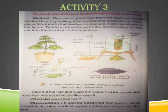Now, first Activity 3. What is Activity 3 all about? We have to study the process of photosynthesis in the leaf — how we know that photosynthesis has occurred in the leaf.